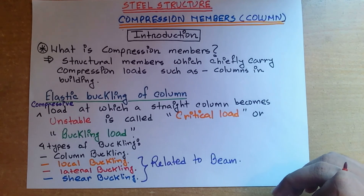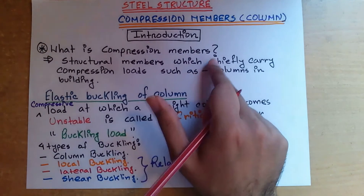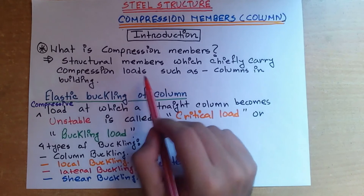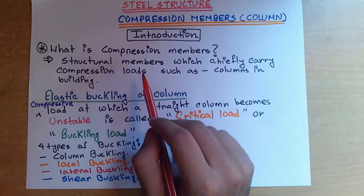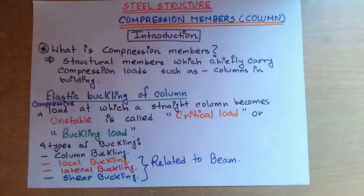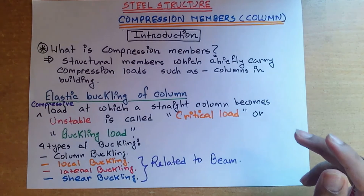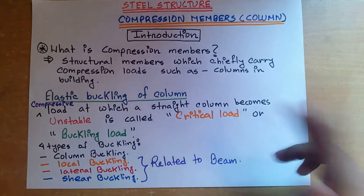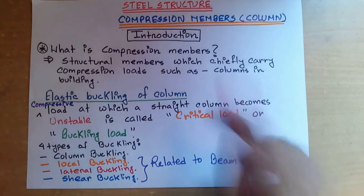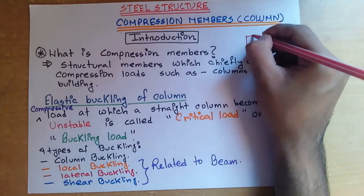A structural member which chiefly carries compression loads is called a compression member. An example is columns in buildings, which can be called compression members. Compressive loads are loads which create compression — for example, if we apply a load axially downward on a column, that is a compressive load.